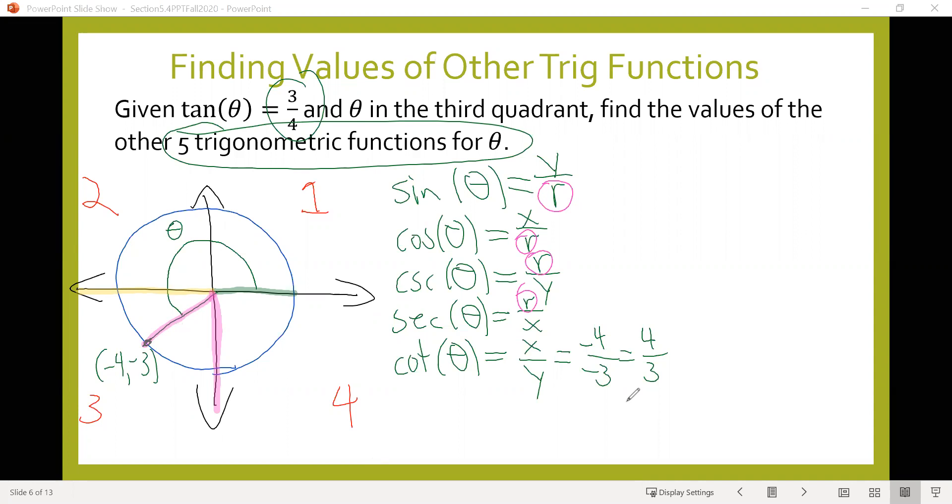How are we going to find r? Well, we know the other end of the radius is at the point (0, 0), so we could use the distance formula. Or notice that if I drop a line to the horizontal axis, it gives me a right angle and a right triangle, where the length of this side is -4 and this side is -3.